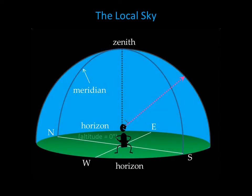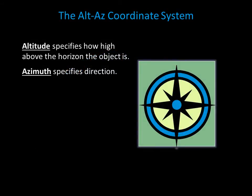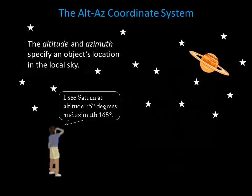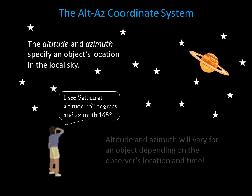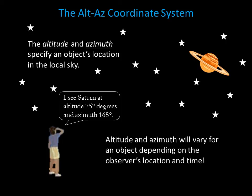For example, if you are looking at the horizon, the altitude is zero degrees; if you are looking at your zenith, the altitude is 90 degrees. Azimuths are usually stated in number of degrees from north: if north is zero degrees, then east is 90, south is 180, and west is 270. You can specify an object's location in the local sky using altitude and azimuth, but it is important to note that altitude and azimuth will vary depending on the observer's location and time.